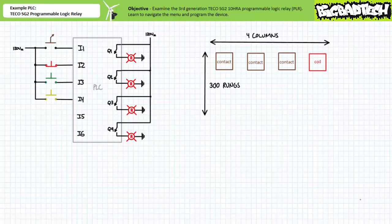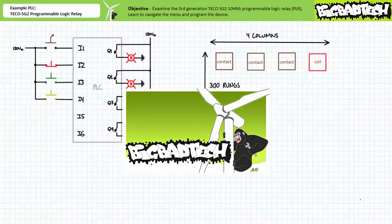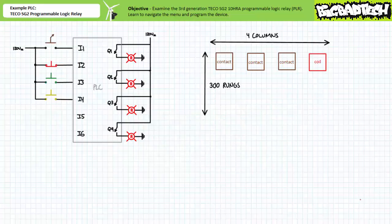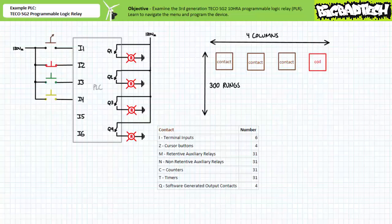The programming format of the TECO SG2 10HRA PLR: the small display allows a ladder logic diagram with four columns — three input or contact fields on the left and one output or coil field on the right. A rung is intended to have three contacts wired to a coil, though fewer can be used. The device can run up to 300 rungs. Available contact types include terminal inputs, cursor buttons, retentive and non-retentive auxiliary relays, counters, timers, and software-generated output contacts. Terminal inputs are the field inputs I1 to I6. Some contacts have coil functions and customizable parameters, which we'll discuss in later lectures.